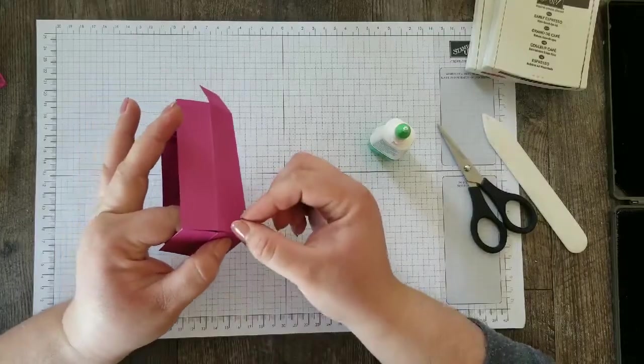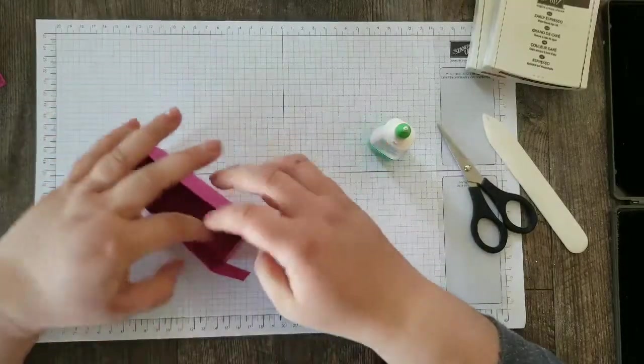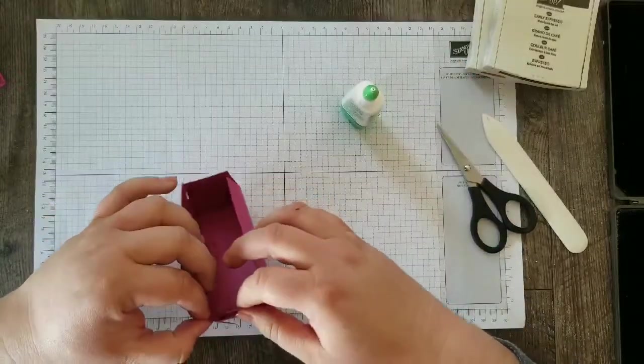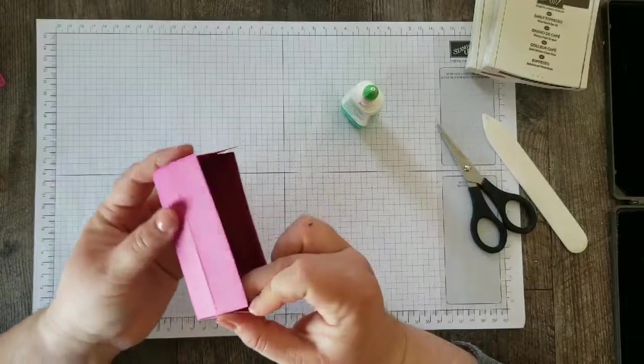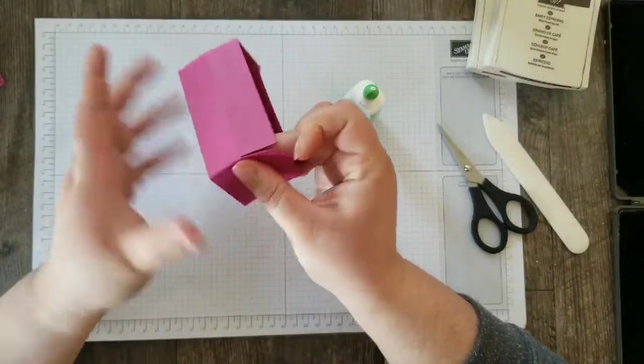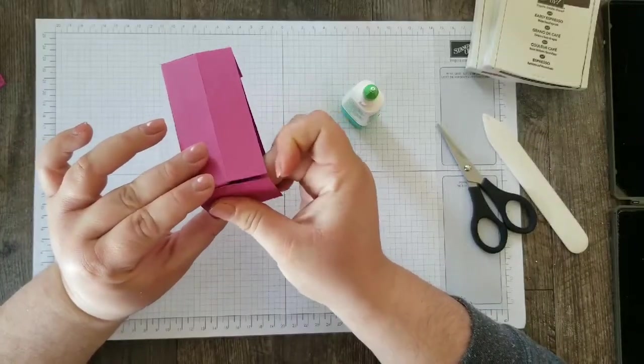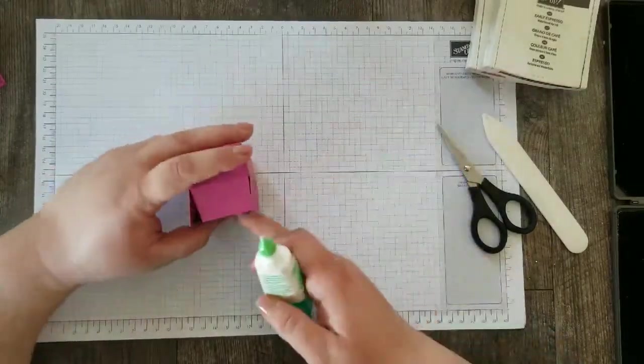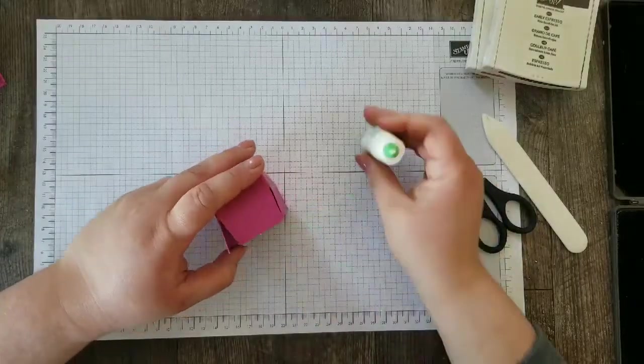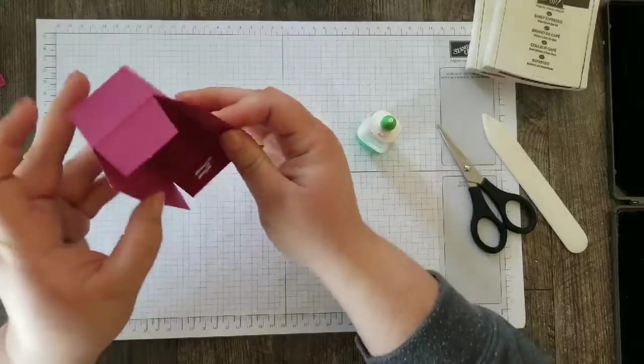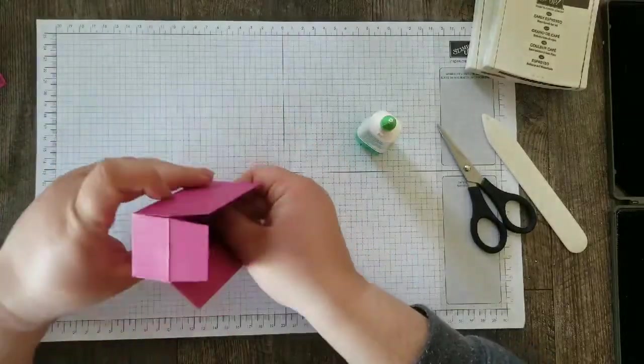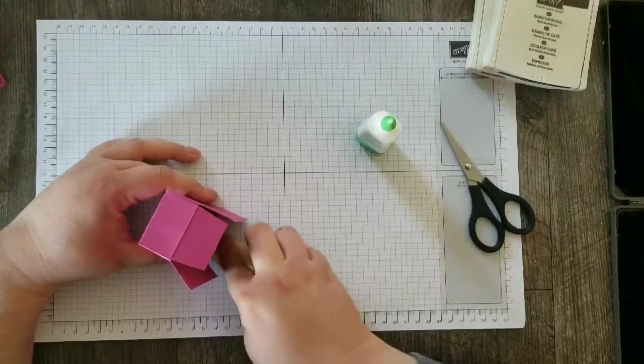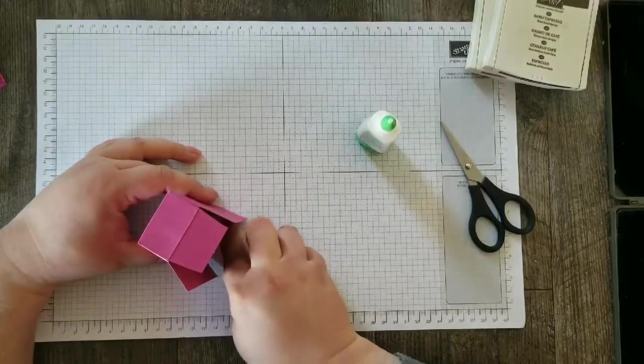Again, we're lining up our crisp edge with the creased edge. And then so that this is nice and kind of hiding our extra layers, we're going to glue the flaps and fold them in. So that's why we notched out the edge of those outside flaps. And I'm going to use my bone folder to kind of get into this tight space here.